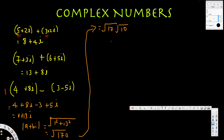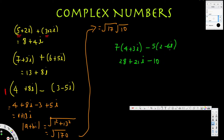Let's try this one using a different color. We have 7 times (4 plus 3i) minus 5 times (2 minus 6i). Distributing: 7 times 4 is 28, plus 7 times 3i is 21i. Then negative 5 times 2 is negative 10, and negative 5 times negative 6i is positive 30i. Adding like terms: 28 minus 10 is 18, and 21i plus 30i is 51i. So the answer is 18 plus 51i.